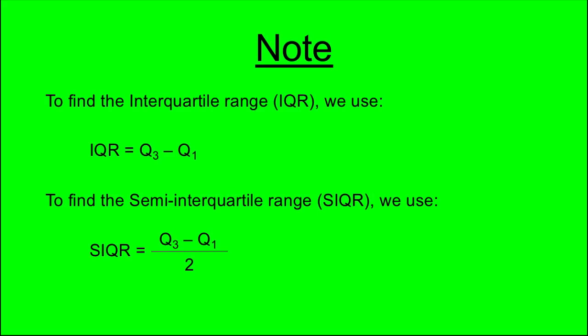To find the semi-interquartile range, SIQR, we use SIQR equals Q3 subtract Q1 all divided by 2.